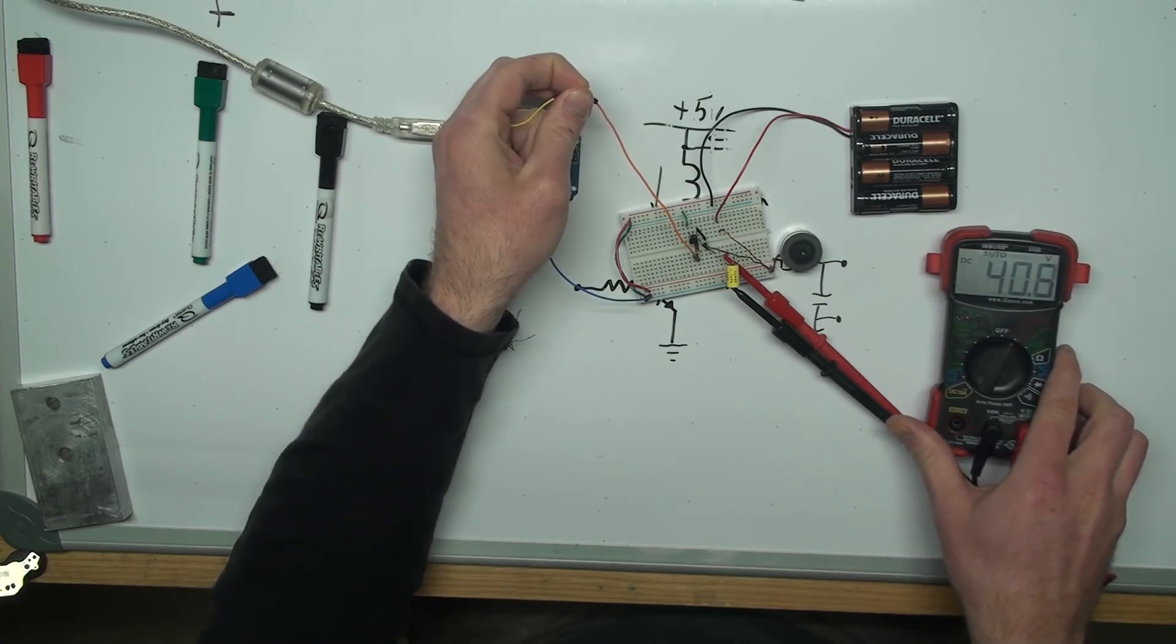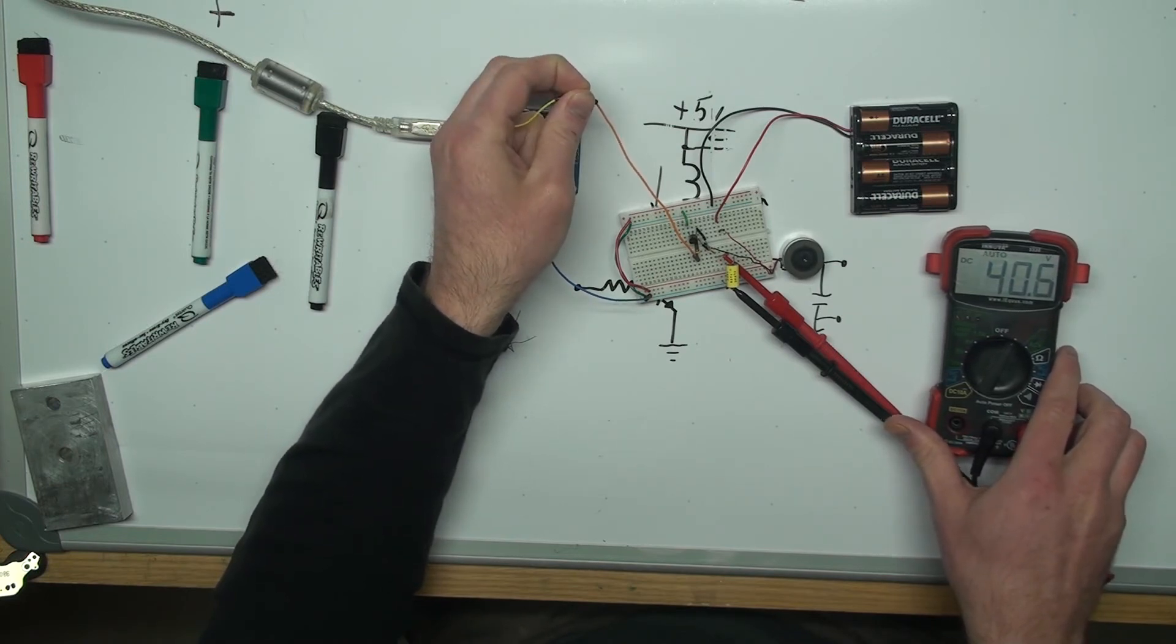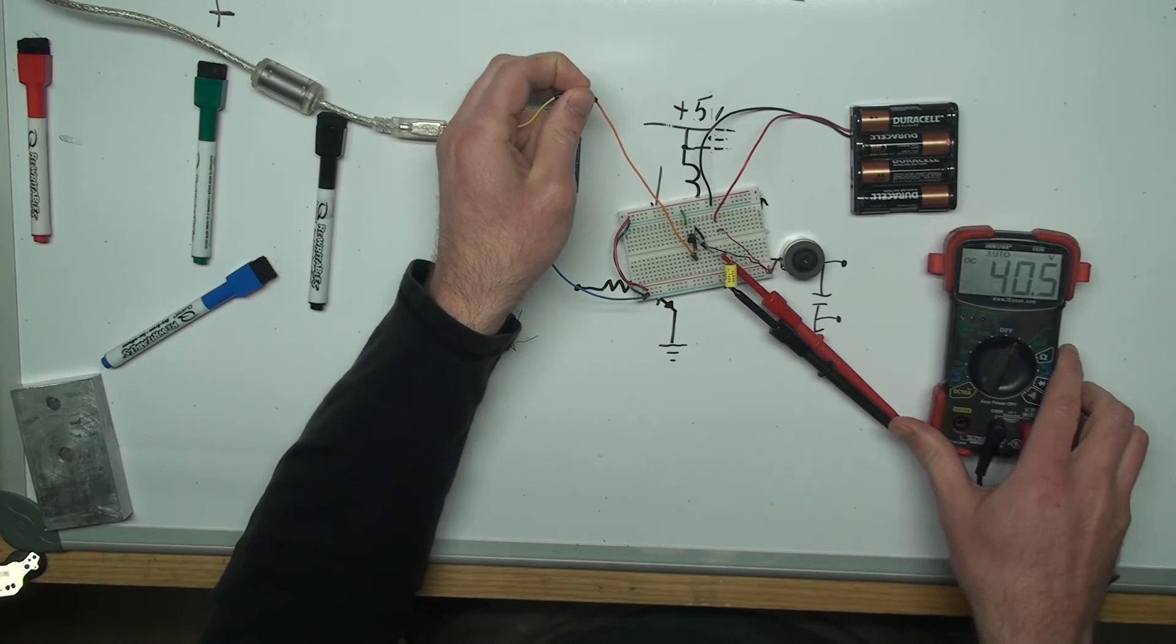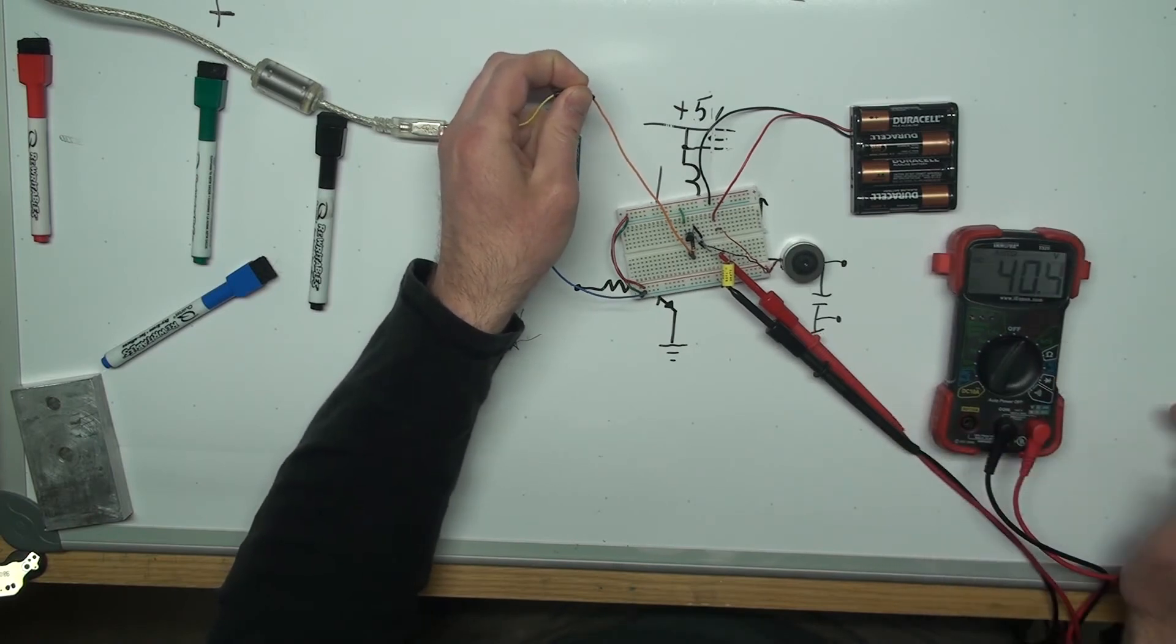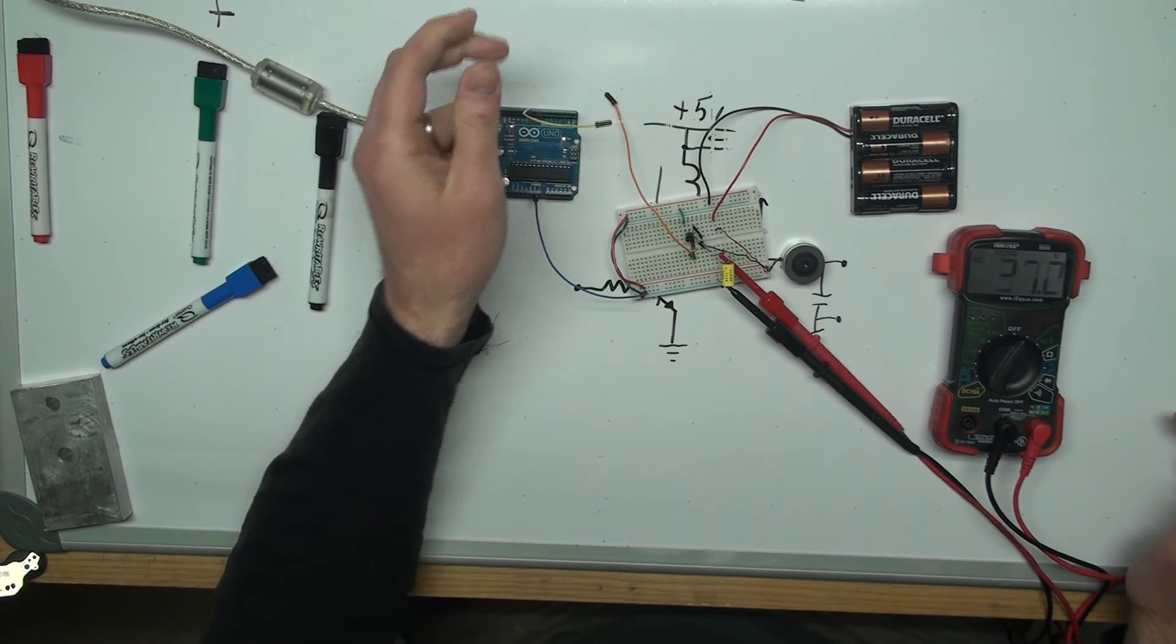Considering that transistor can only handle maybe 60 volts or so, that could be a real problem if these were fully charged batteries or that motor were a bit larger and could handle more current. So we'll put in the freewheeling diode.